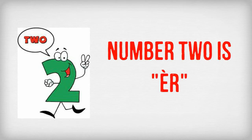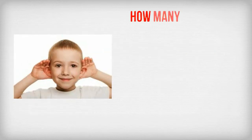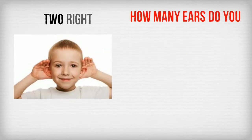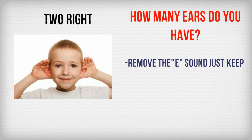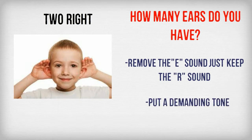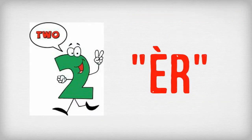Number 2 is ER. It's a fourth tone. Please think this way: how many ears do you have? Two, right? Just remove the R sound and keep the E sound, then put the fourth — a demanding tone. You should remember number 2 now, which is ER.